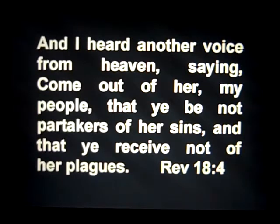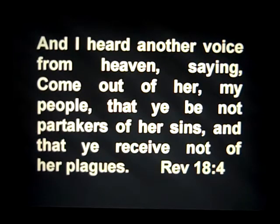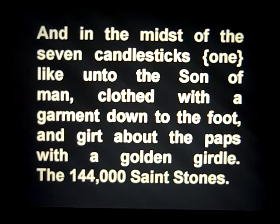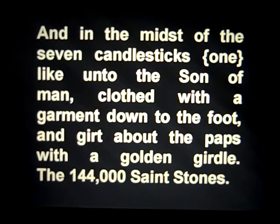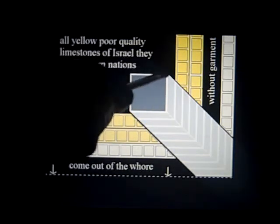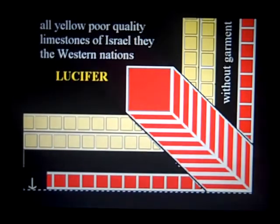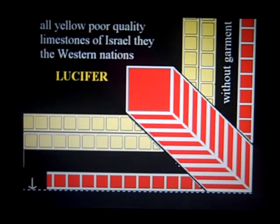Quoting Revelation 18:4: 'And I heard another voice from heaven saying, come out of her my people, that you be not partakers of her sins and that you receive not of her plagues.' That's talking of the great hall — the Church of Rome and all her offspring. 'And in the midst of the seven candlesticks, one like unto the Son of Man, clothed with a garment down to the foot, and girt about the paps with a golden girdle.' That's reference to the 144,000 saints stones — the 'paps' being the breast, like a breastplate — again reiterating the 144,000 moving forward to line up with the four cornerstones, leaving behind the great whore. All the yellow are the poor-quality limestone stones of Israel, the western nations controlled and dominated by Lucifer.